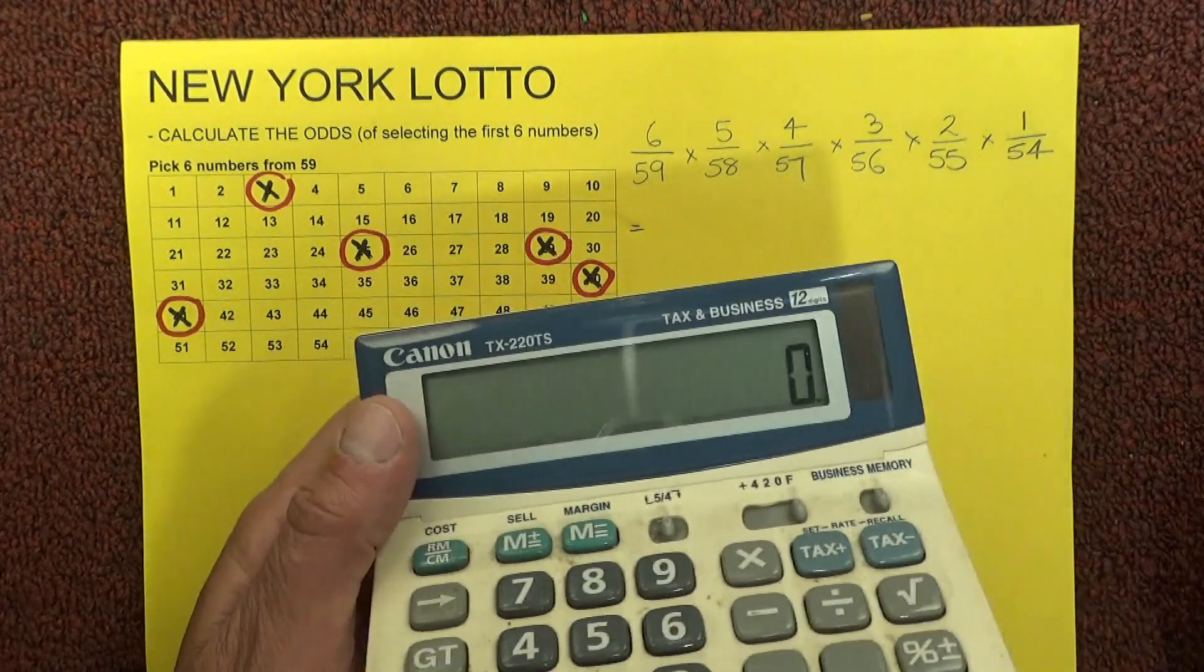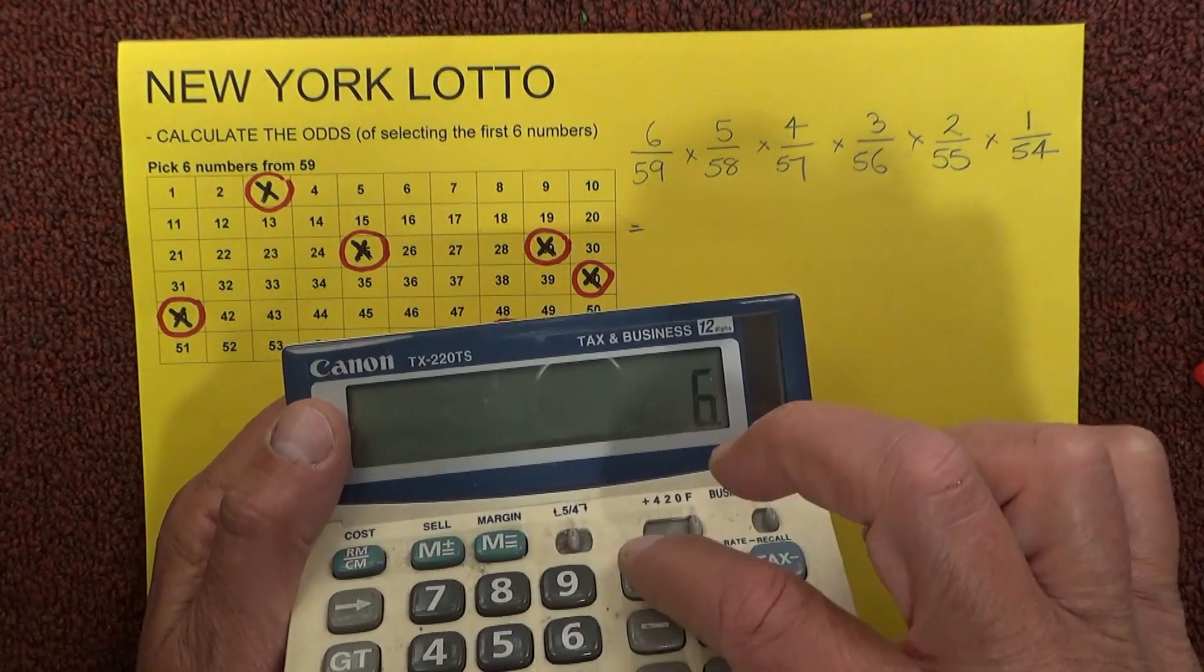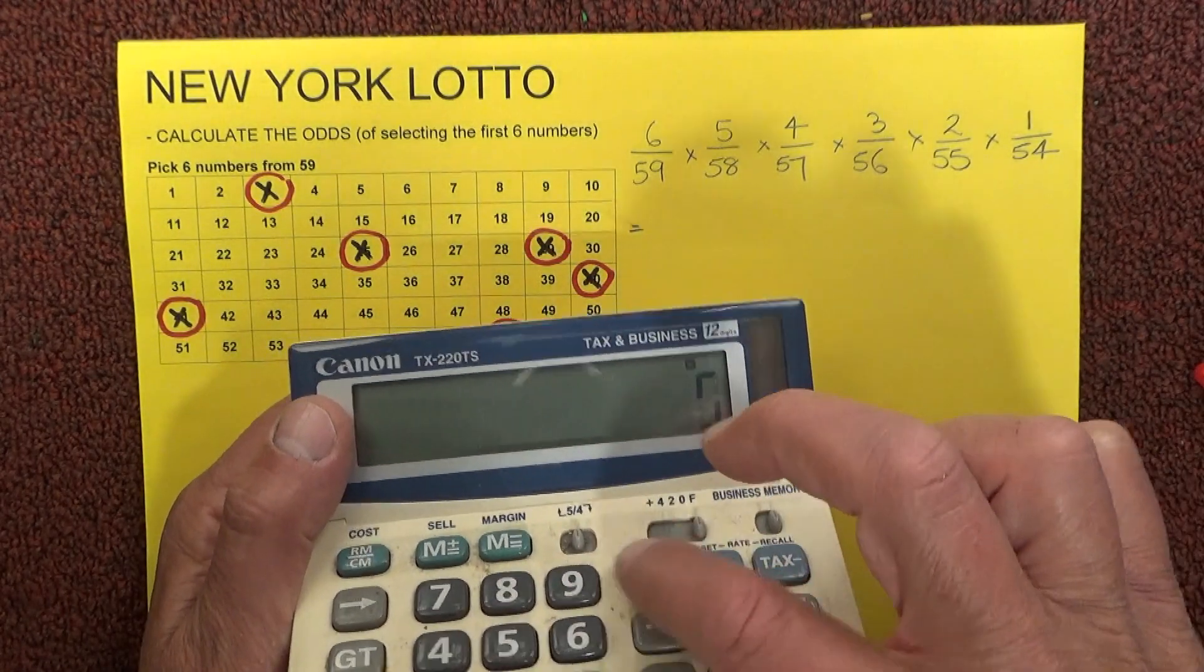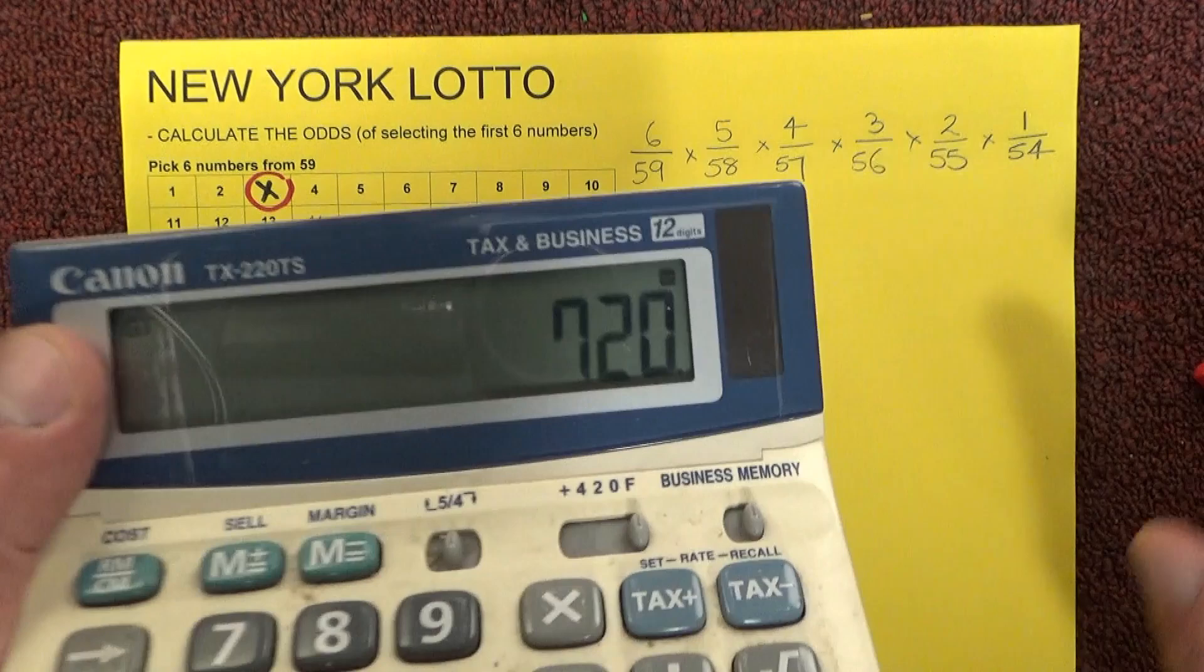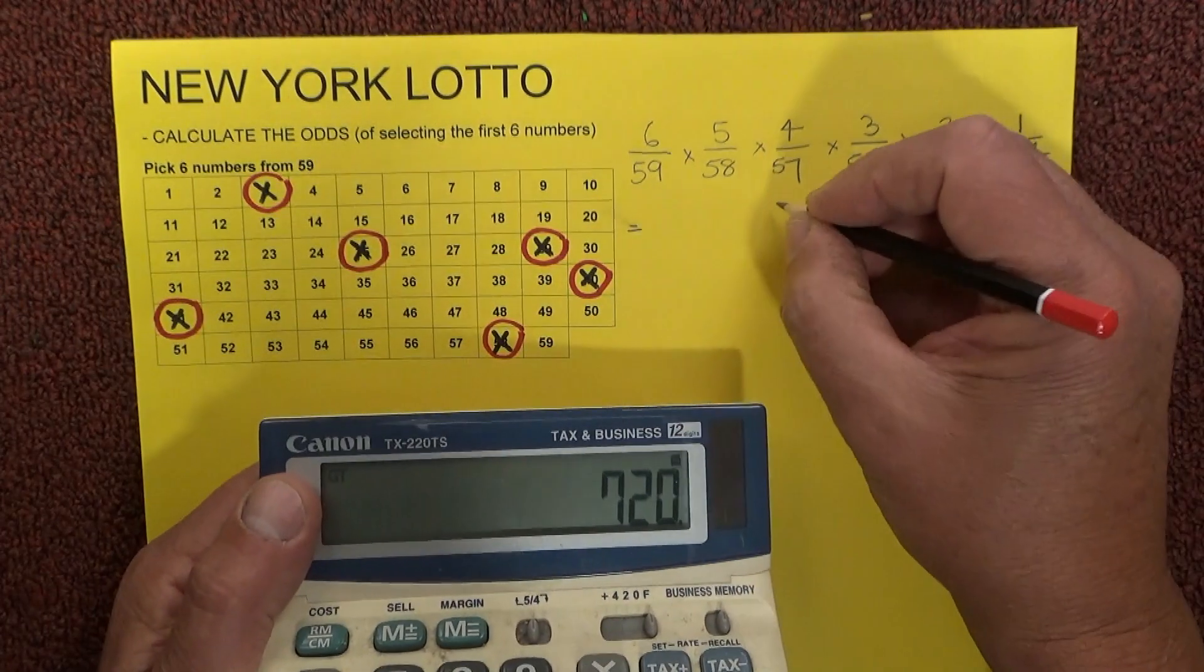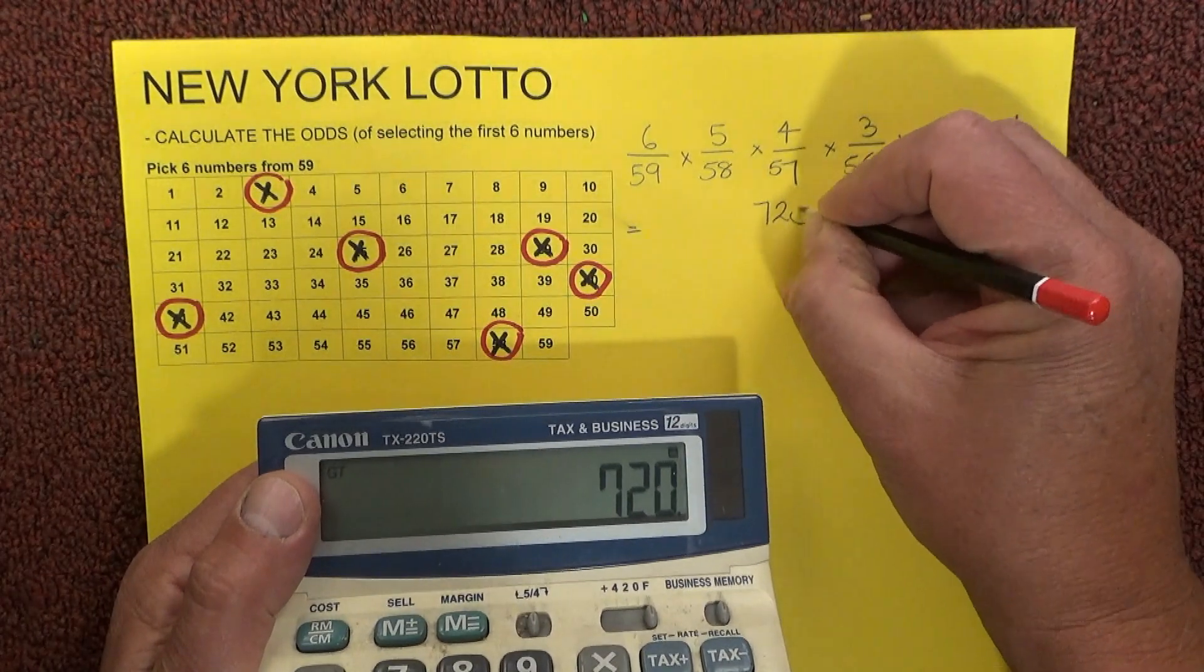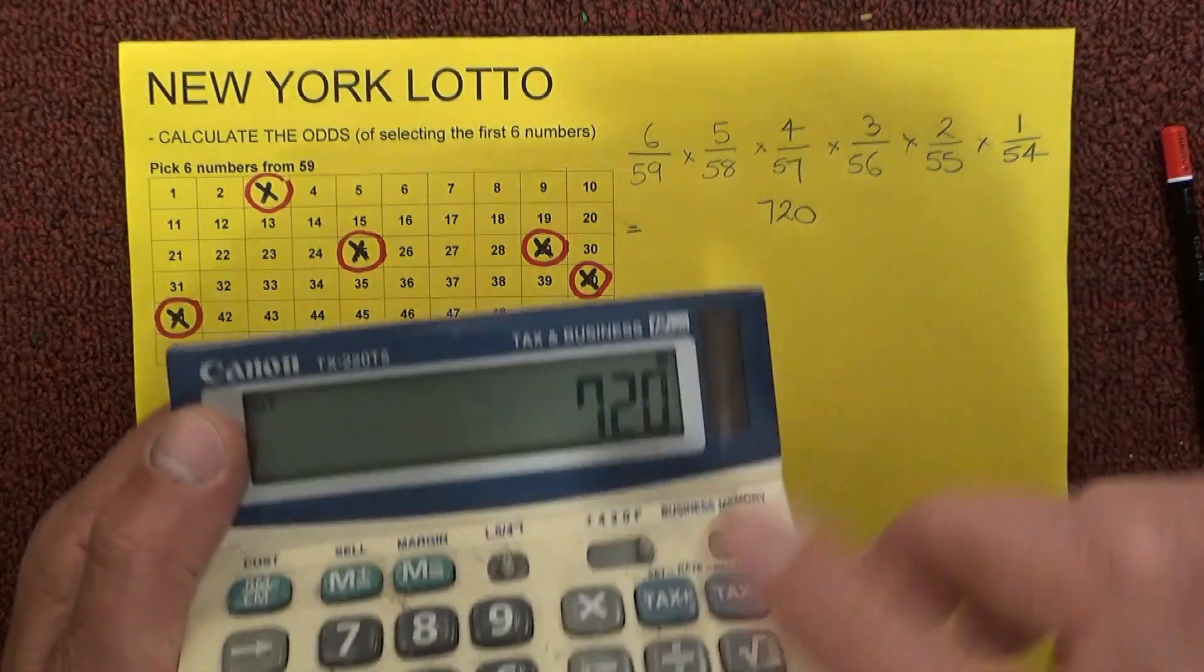I'll punch those numbers into my calculator. So it's 6 times 5 times 4 times 3 times 2 times 1 for the top row, and that gives the answer of 720.